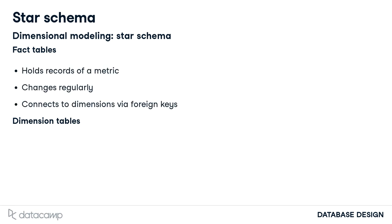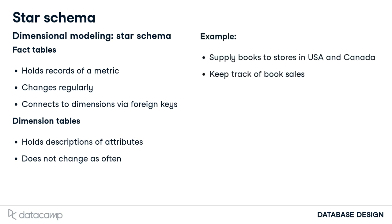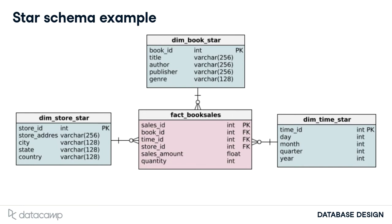Fact tables hold records of metrics that are described further by dimension tables. Throughout this chapter, we are going to use another bookstore example. This time you work for a company that sells books in bulk to bookstores across the US and Canada. You have a database to keep track of book sales. Excluding primary and foreign keys, the fact table holds the sales amount and quantity of books. It's connected to dimension tables with details on the books sold, the time the sale took place, and the store buying the books.